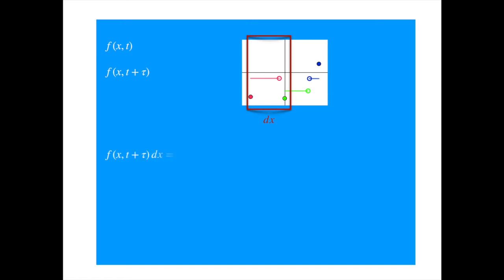As the probability of displacements was assumed to be symmetric around zero, we can replace the minus sign in front of delta with a positive sign.